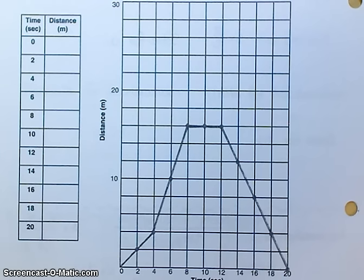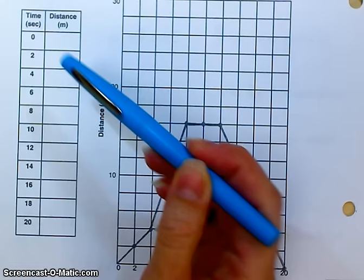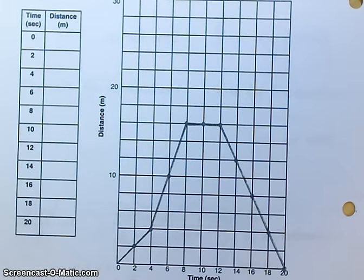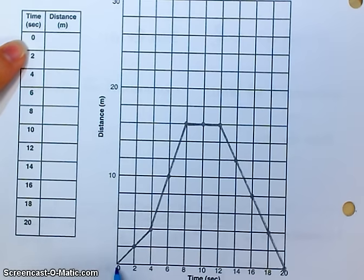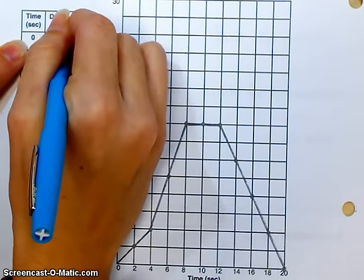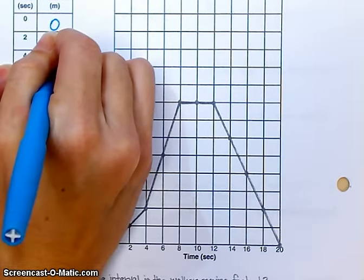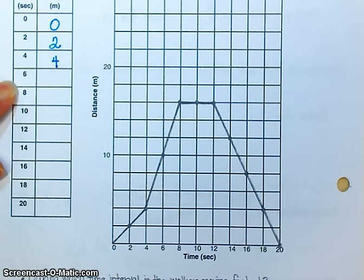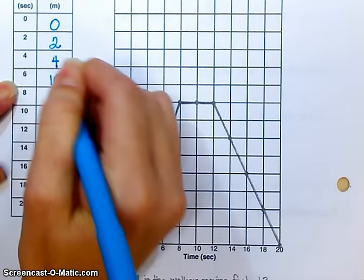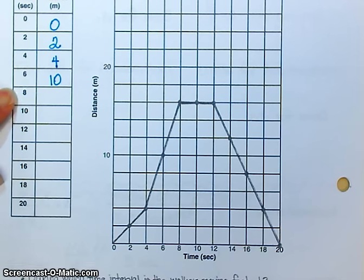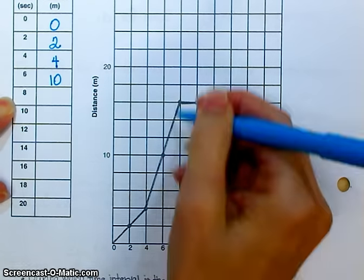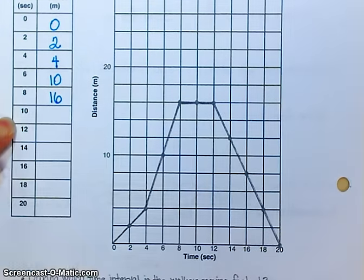On the back page, the first thing I'm going to do is I'm going to look at the graph and I am going to fill in the table. What is the distance at 0 seconds? 0 meters. What is the distance at 2 seconds? 2 meters. At 4 seconds? 4 meters. At 6 seconds? 10 meters. How are you coming up with these numbers? I'm looking at the graph. Good. At 8 seconds, I'm at 16 meters. At 10 seconds, 16.